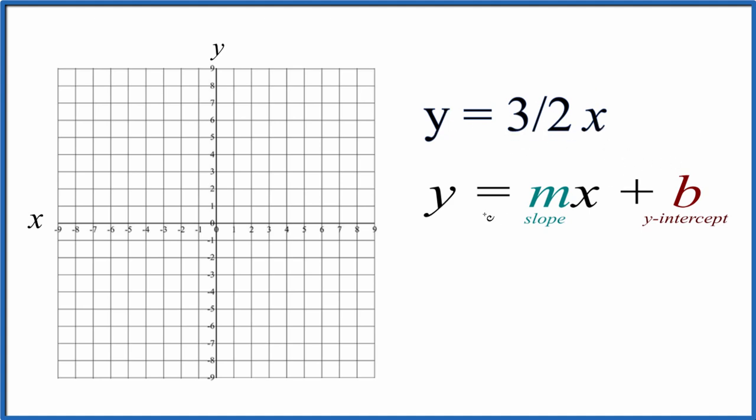So with slope-intercept formula, we have y equals mx plus b. We don't have b up here. We can just say that b is zero. So now we have a y-intercept. We can just go to the y-axis, go to zero, and that's where our graph, that's where the line's going to cross the y-axis.